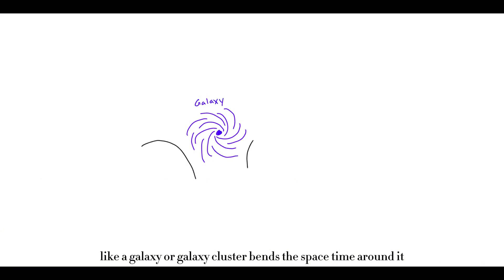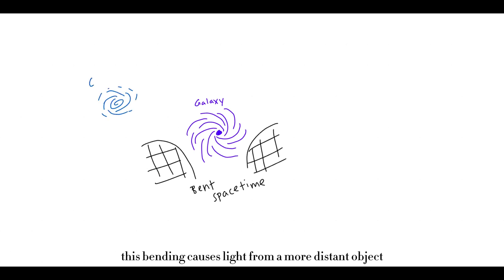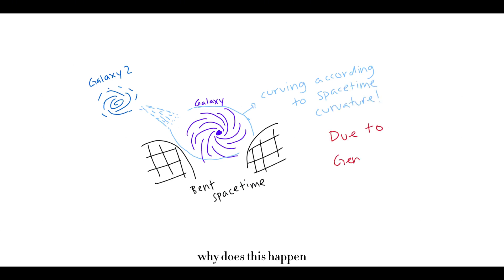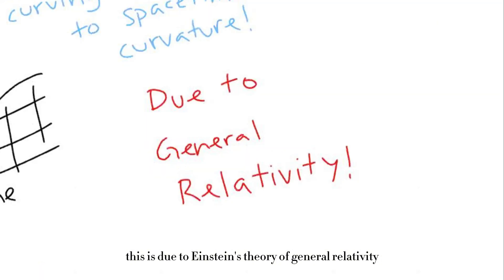So what is gravitational lensing? Gravitational lensing happens when a massive object like a galaxy or galaxy cluster bends the spacetime around it. This bending causes light from a more distant object behind the galaxy cluster, like another galaxy or maybe a quasar, to curve as it travels towards us. Why does this happen? This is due to Einstein's theory of general relativity.